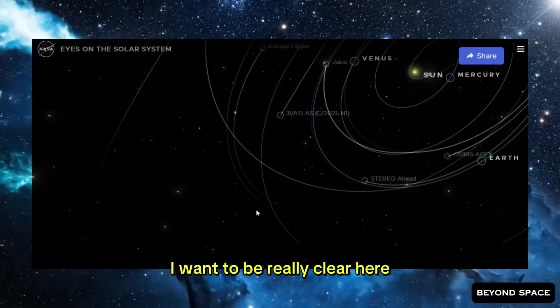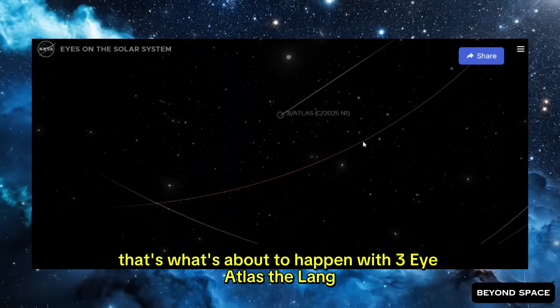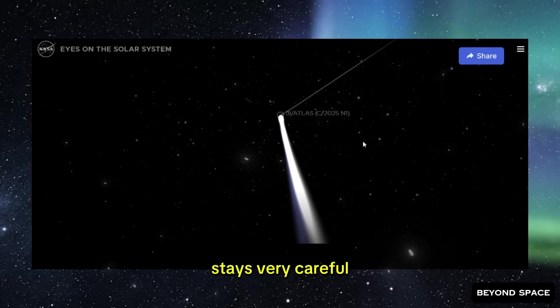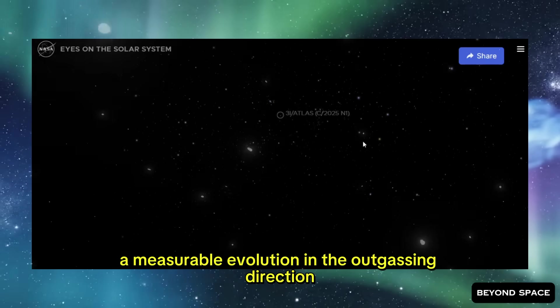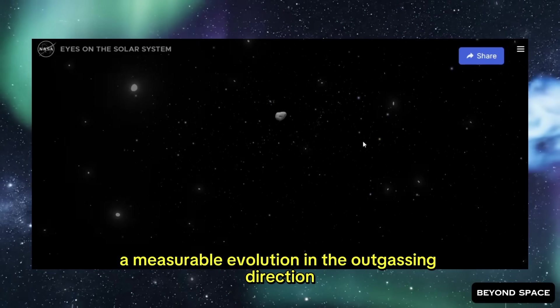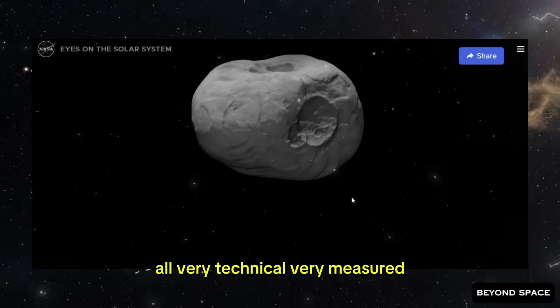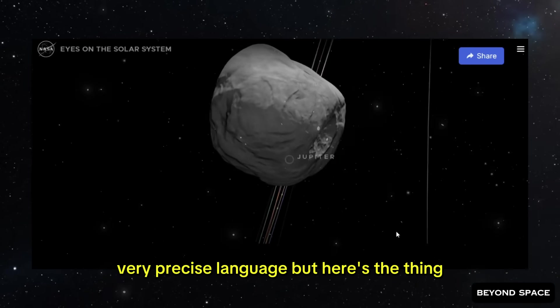Now, I want to be really clear here. Nobody is officially saying that's what's about to happen with 3i Atlas. The language in the alerts and the updates stays very careful. They talk about a new update to the orbital solution. A measurable evolution in the outgassing direction. A shift in the net non-gravitational acceleration. All very technical, very measured, very precise language.